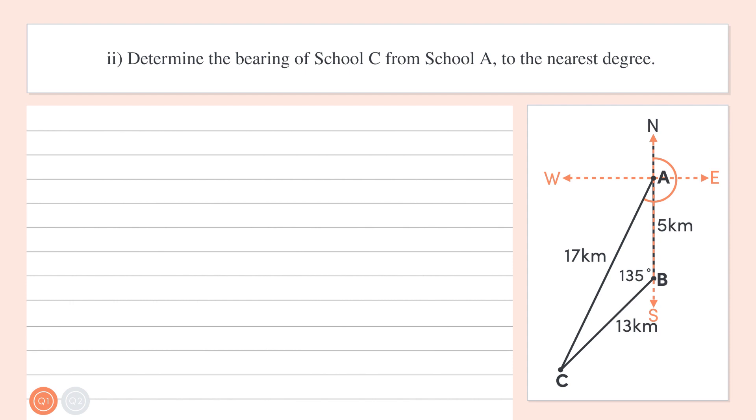So here we've been told that A is directly north of B, which means that this angle here is 180 degrees. So then all we need to do is calculate this angle. Let's label it theta. And then we'll add theta to 180 degrees to get the bearing. Okay, let's decide which formula is suitable to use to find theta.